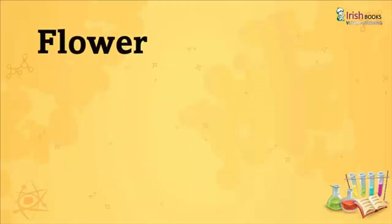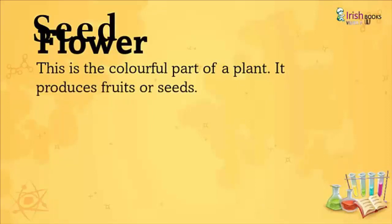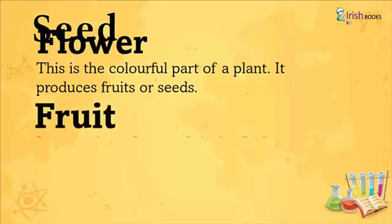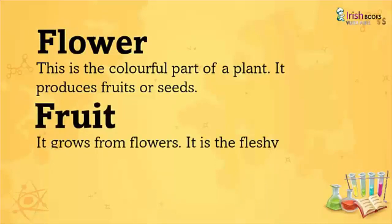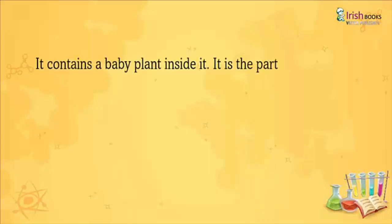Flower: This is the colorful part of a plant. It produces fruits or seeds. Fruit: It grows from flowers and is the fleshy part of a plant. Seed: A seed contains a baby plant inside it. It is the part from which a new plant grows.